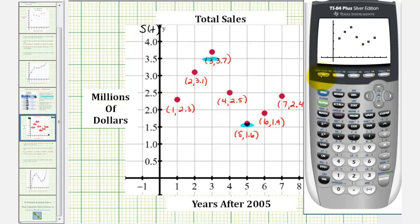And now we can perform our regression. But before we do this, we want to make sure the diagnostic feature is turned on, so that we can see the r squared value, or the coefficient of determination, to see how well the model fits the data. To do this, we'll press second zero for the catalog, and scroll down to diagnostic on. Which is here, so we'll press enter, and then enter.